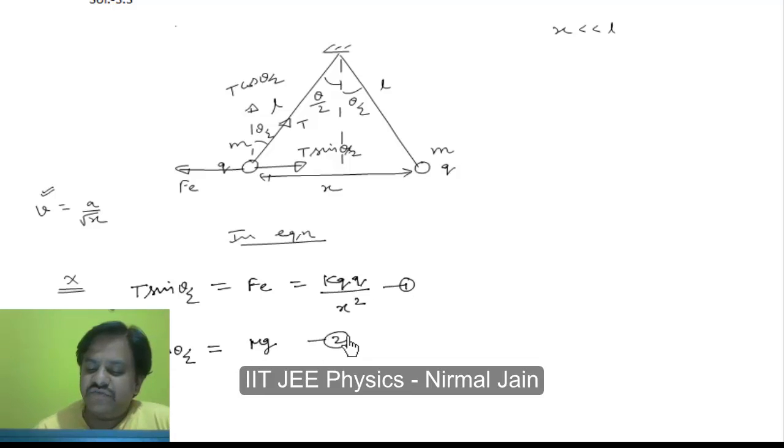If we divide equation 1 by equation 2, then what we will get is tan theta by 2 is equal to 1 by 4 pi epsilon 0 q square by X square mg. We know that we are told that X is very very less than L, then this angle theta or theta by 2 must be quite small.